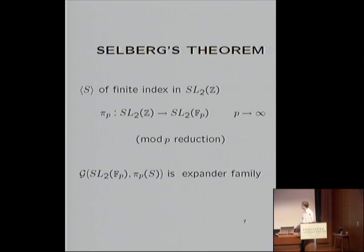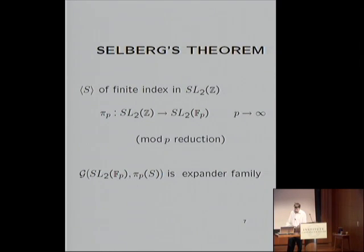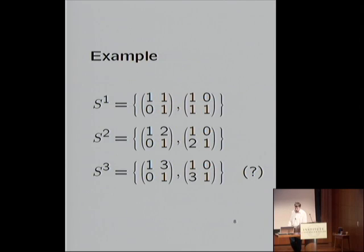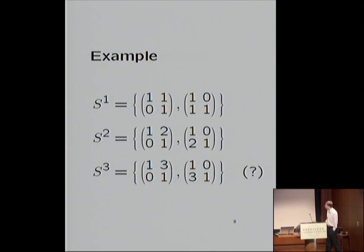What is very unsatisfactory is the strong assumption that we assume a finite-index subgroup. So how do we get around that? We now have a much more general statement, because we only require the group generated by S to be non-elementary — equivalently, for D equals 2, that it contains a free group. This is the Lubotzky 1-2-3 problem: with three sets S1, S2, S3 of elements of SL(2,Z), S1 and S2 fall under Selberg's theorem as they generate finite-index subgroups, but S3 does not generate a finite-index subgroup, and whether its reduction mod P gives an expanding family was unclear — and is one result that can now be answered in the affirmative.